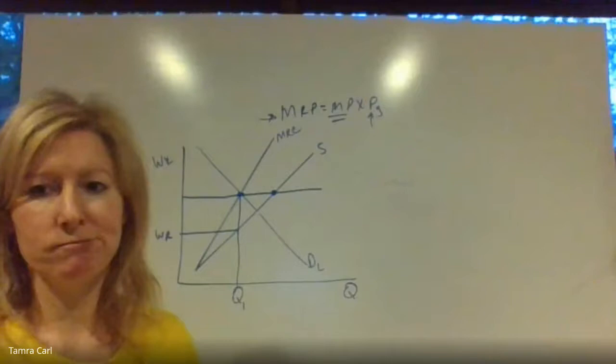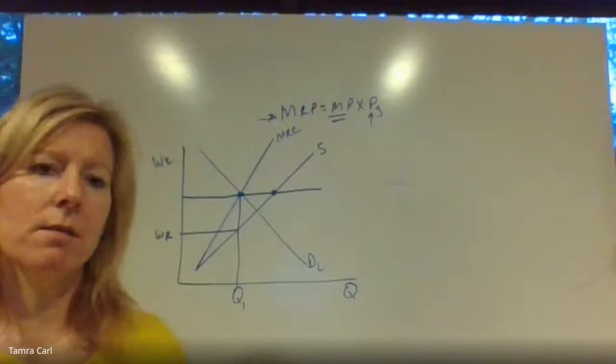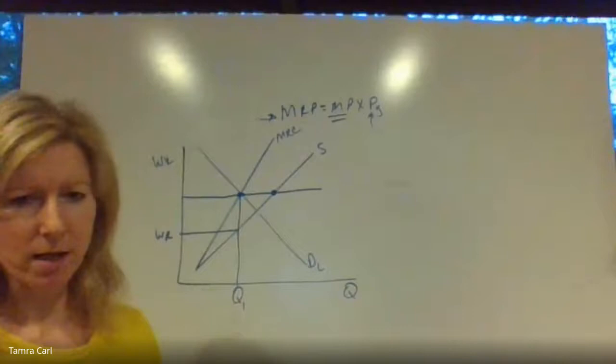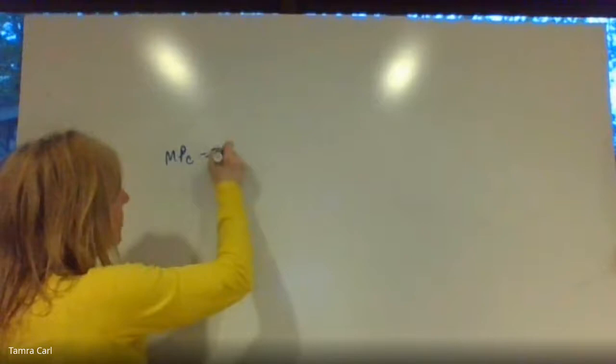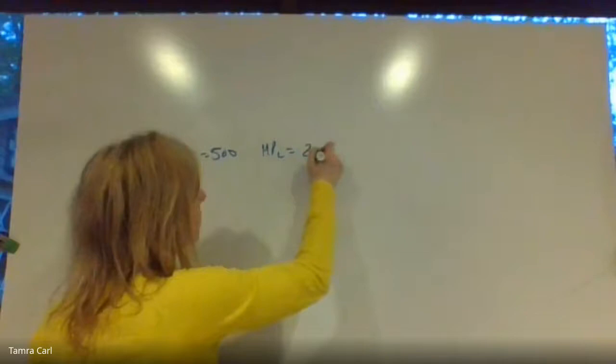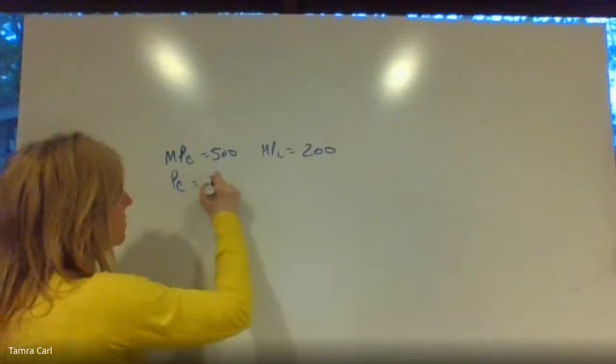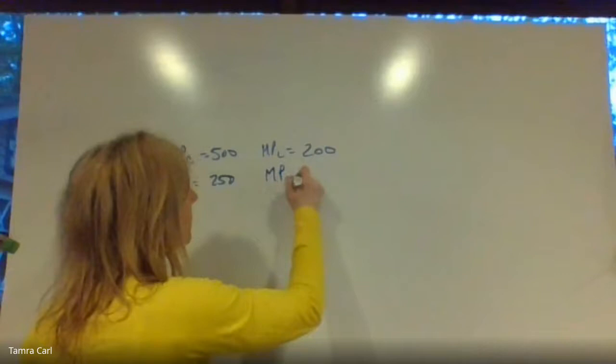Then we come back to the least-cost rule and the profit-maximizing rule. These are really plug-and-chugs — like story problems. If they tell you the marginal product of capital equals 500, the marginal product of labor equals 200, the price of capital equals 250, and the price of labor equals 50, and ask you whether to employ more or less of each input...